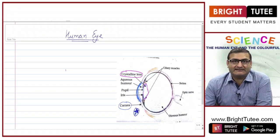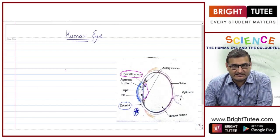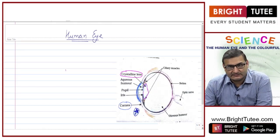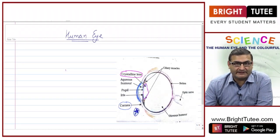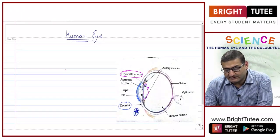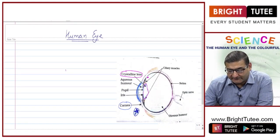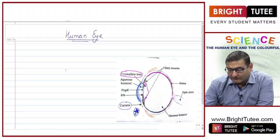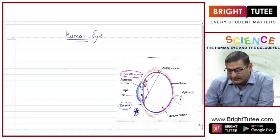The crystalline lens is also a convex lens which converges and bends the light rays entering the eye through the cornea. This particular lens bends the light rays in such a way that the image is formed on a particular screen.